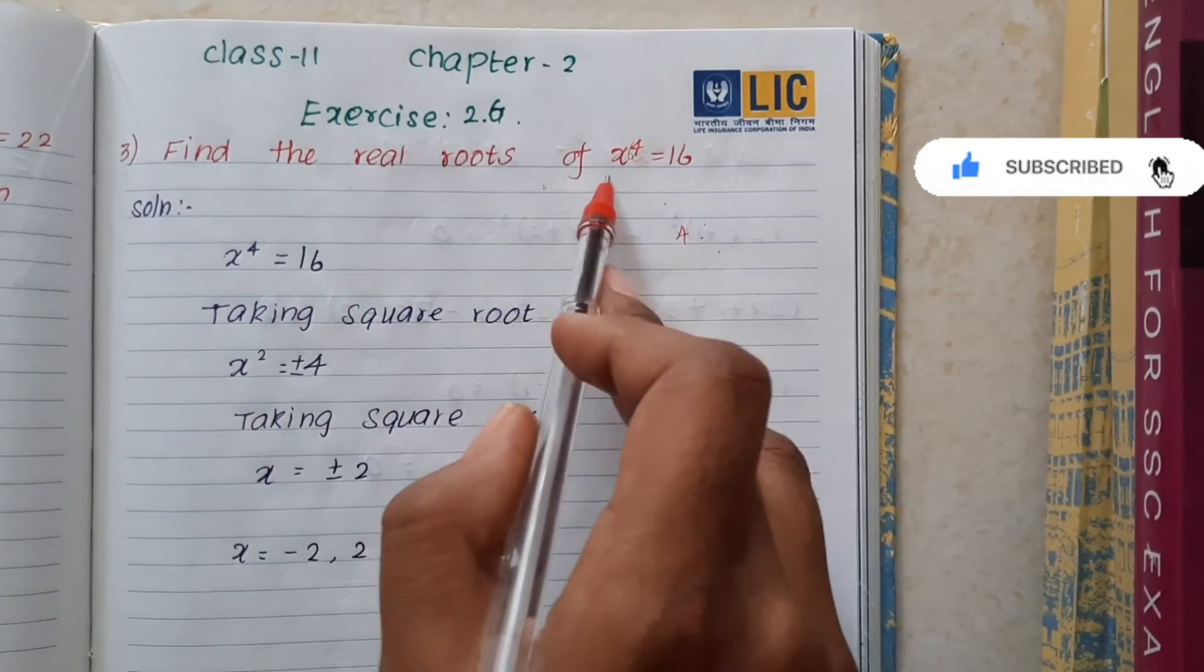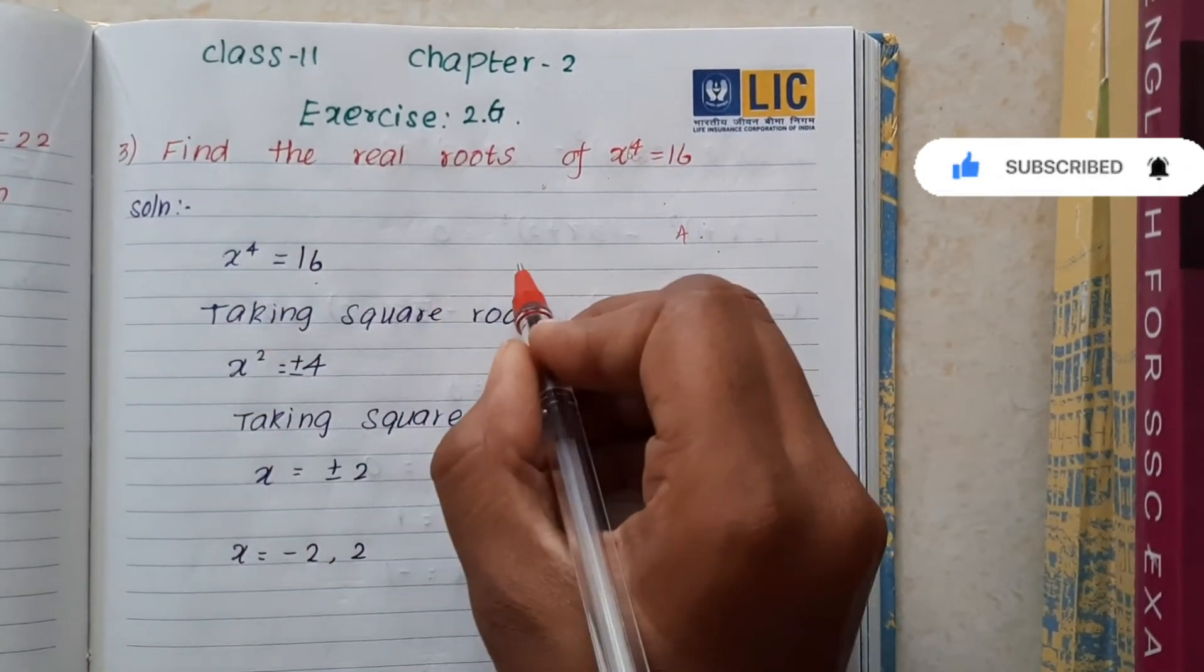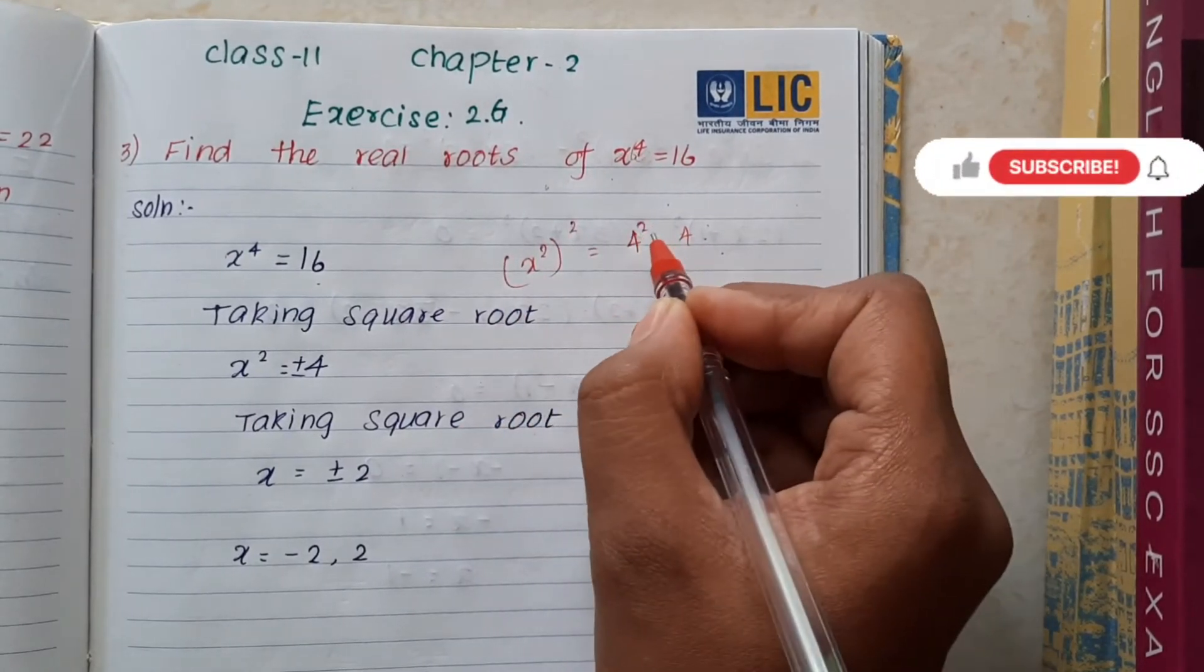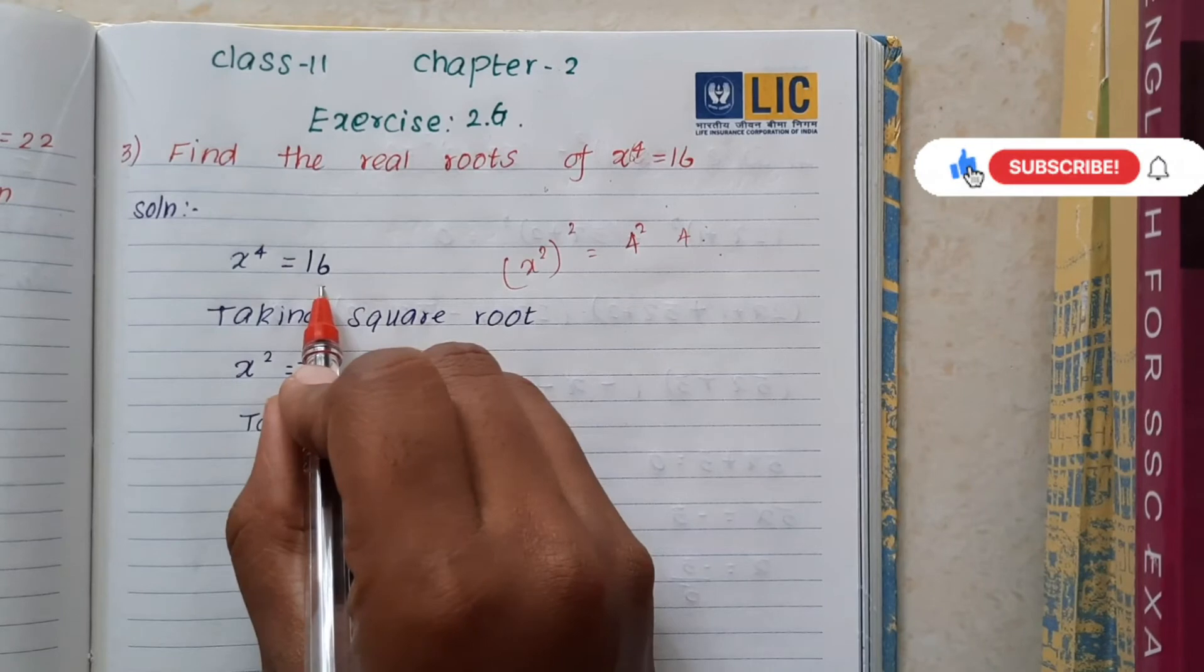What is it? Now, x⁴ is equal to 16. We can write this as x² whole square is equal to 4 square. 4 square is equal to 16.